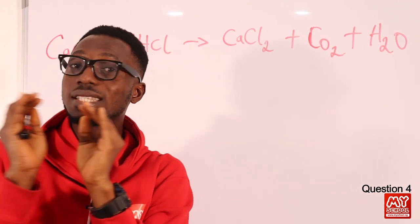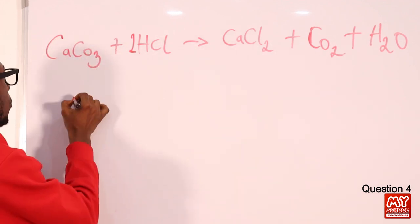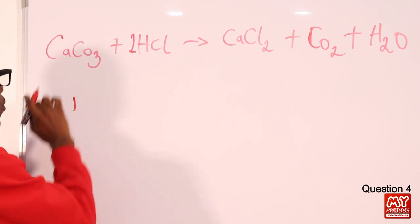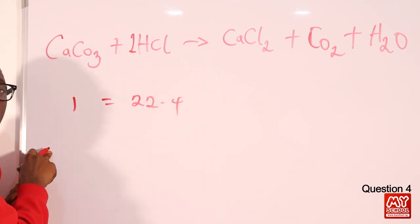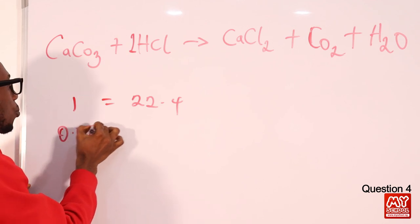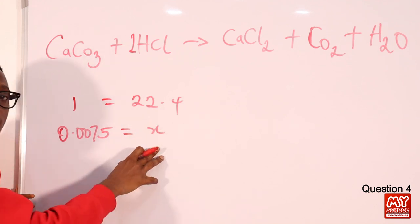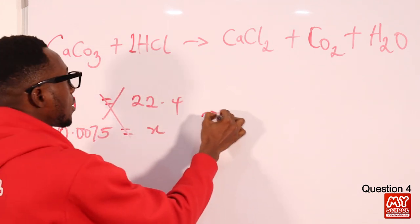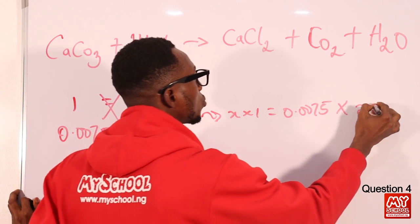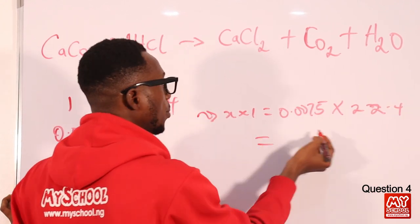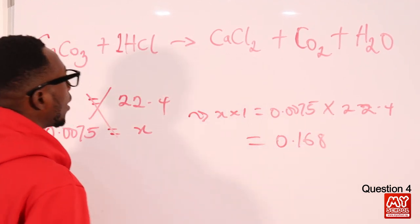Since one mole of CaCO₃ corresponds to 22.4 dm³ of gas at STP, and we have 0.0075 moles, by cross-multiplication: X × 1 = 0.0075 × 22.4, giving X = 0.168 dm³. Converting from dm³ to cm³ by multiplying by 1000, we get 168 cm³.